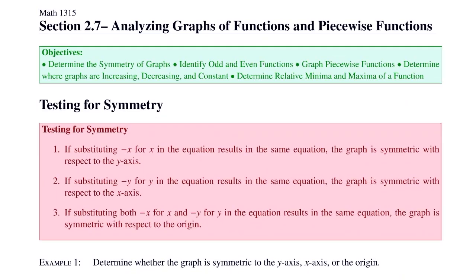In this section, we'll be analyzing graphs of functions and talking about piecewise functions. We start by testing for symmetry — three types: symmetry with respect to the y-axis, x-axis, and origin. To test for symmetry with respect to the y-axis, substitute negative x for x in the equation and see if it comes out the same.